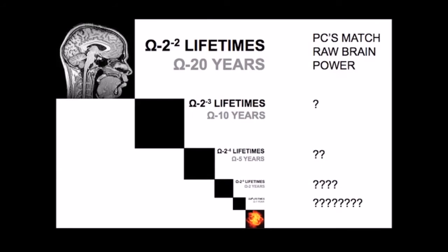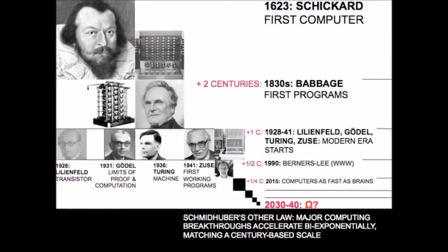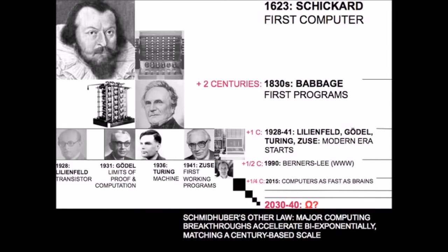In 1623 Schickard built the first computer. Two centuries later, Babbage came up with programmable control computers — Schickard's machine could only do simple arithmetic. One century after that, the first really working computer was built by Zuse in 1941. In the 1930s, Turing invented the concept of the Turing machine, and by the end of that decade the field of computer science as we know it was established. Then half a century later, in 1990, the WWW was created and within a few years changed the world. With three data points you can extrapolate without hesitation.